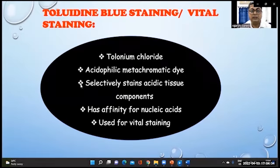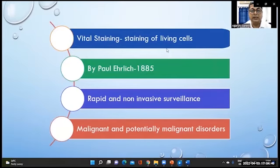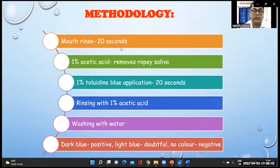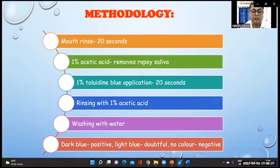Toluidine blue staining is another vital staining method. It selectively stains acidic tissue components and has affinity for nucleic acids. Vital staining allows rapid and non-invasive surveillance to screen malignant and potentially malignant disorders. The method: rinse the mouth with an antiseptic solution, use 1% acetic acid to remove ropy saliva, apply 1% toluidine blue for 20 seconds, rinse with 1% acetic acid and water. Dark blue appearance is positive, light blue is doubtful, and no color is negative.